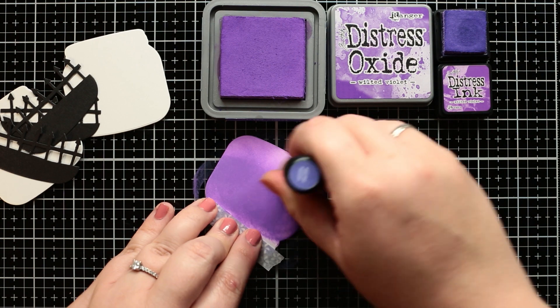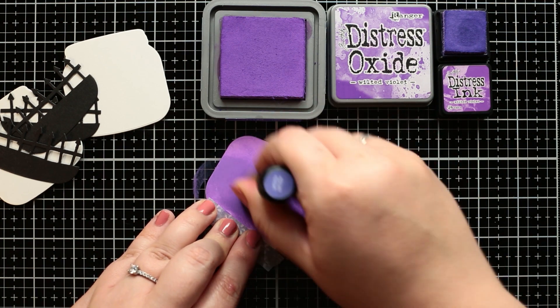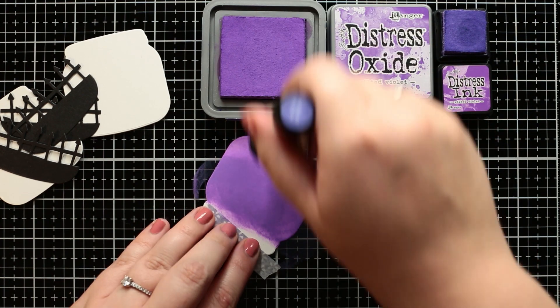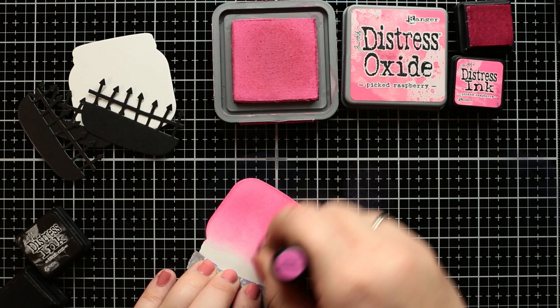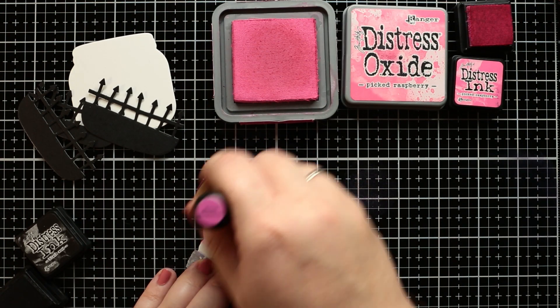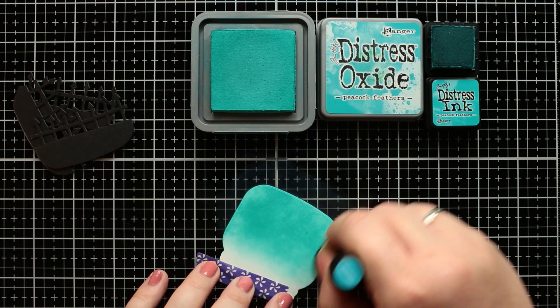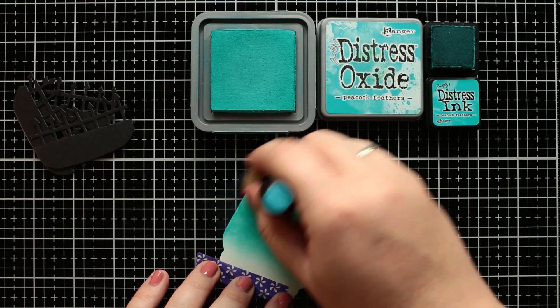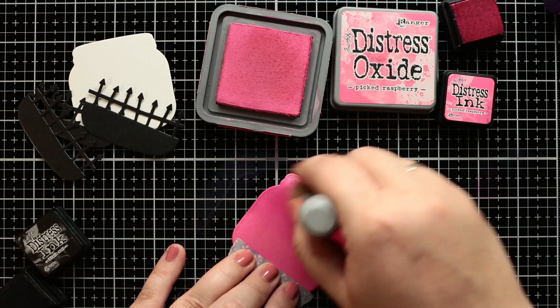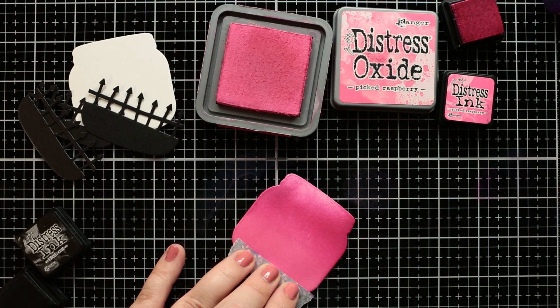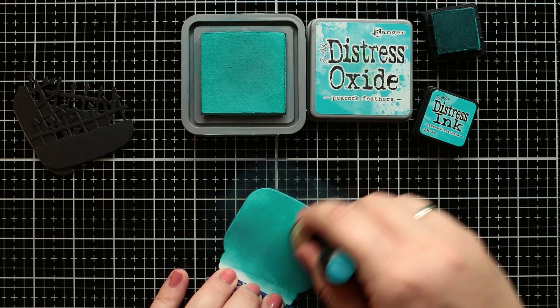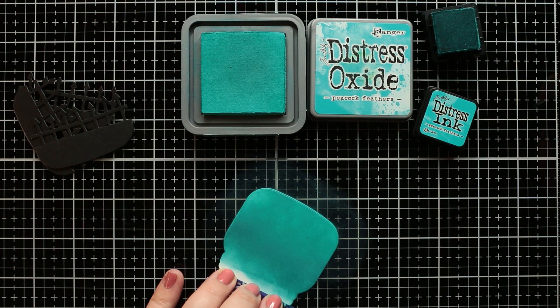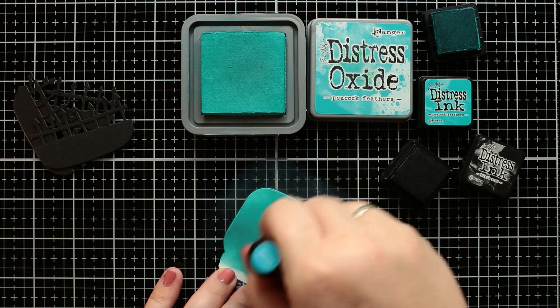Next I continue with ink blending on the white jar die cut. I'm using the wilted violet, picked raspberry and peacock feathers distress oxide ink as well as the regular mini inks in the same color to add a bit more contrast to the edges. And in the end I added slight touches with black soot distress mini ink for all the backgrounds.